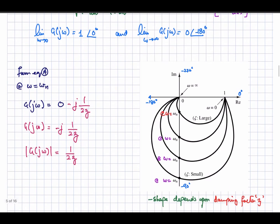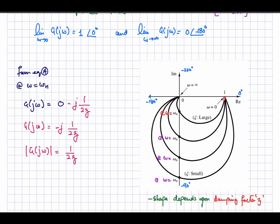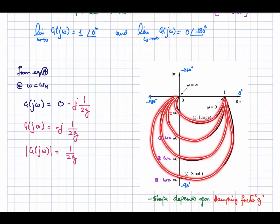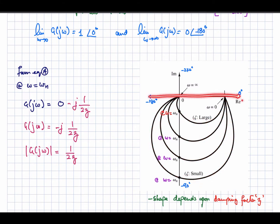The polar plot of the quadratic pole pair sketches the variation in magnitude versus phase. The shape of the polar plot depends upon the damping factor zeta. For large zeta the curve is one shape, and as damping is reduced the polar plot curves become more pronounced for this second-order transfer function with quadratic poles.